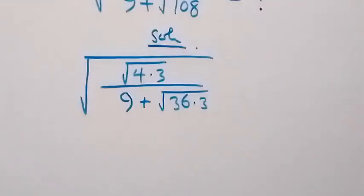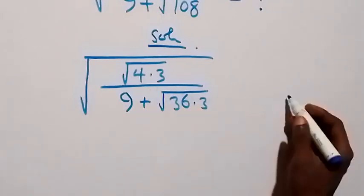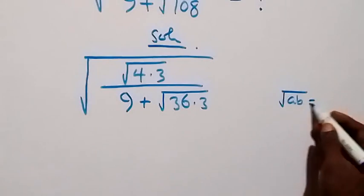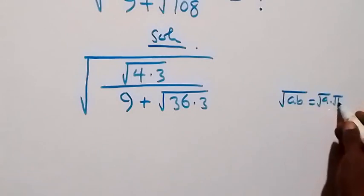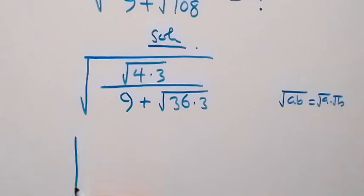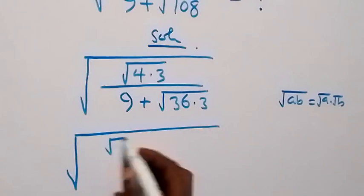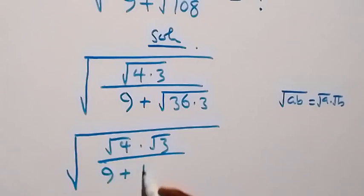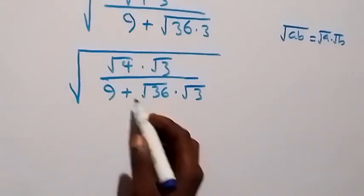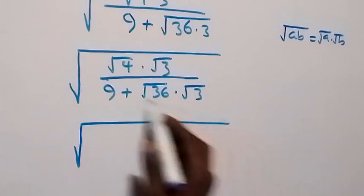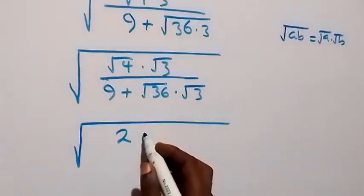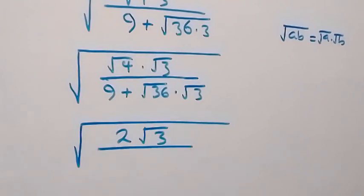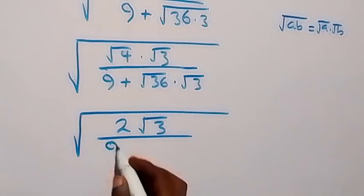From here we can also break this down: when we have root AB, it can be written as root A times root B. So this will become square root of root 4 times root 3, then over here we have 9 plus root 36 times root 3 as well. From here, root 4 is 2, then times root 3 — that's 2 root 3 — then over here we still have 9.